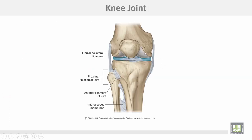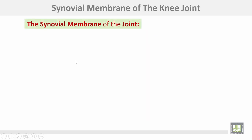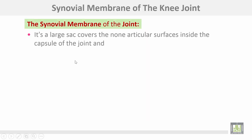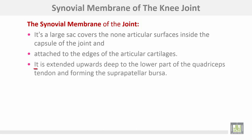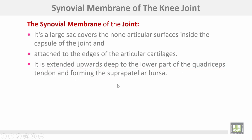This is the knee joint — the lower end of the femur, upper end of the tibia, and this is the patella. The synovial membrane of the knee joint is the largest sac; it covers non-articular surfaces inside the capsule of the joint and attaches to the edges of the articular cartilages. It extends upward deep to the lower part of the quadriceps tendon, forming the suprapatellar bursa.